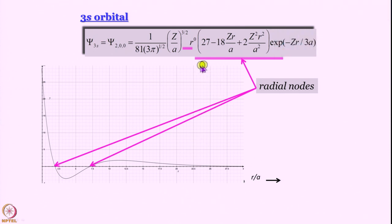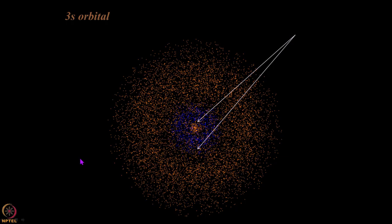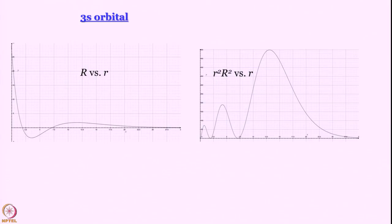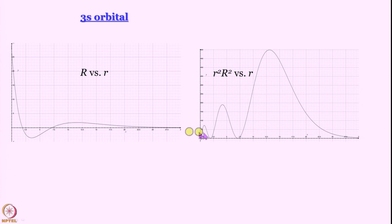The 3s orbital has a second-order Laguerre polynomial, so naturally two roots, meaning the wave function becomes 0 at two values of r. The Laguerre function property dictates that both roots are real. In the scatter plot of 3s, you can see three different regions. Note that the outermost lobe of the wave function is the smallest, but when we multiply by r² to get the probability distribution 4πr² |R|², the outermost lobe actually becomes the largest. So the probability of finding the 3s electron is highest in this outermost major lobe.